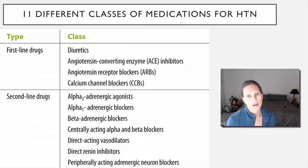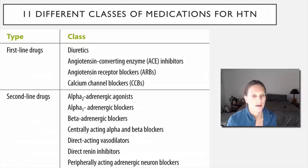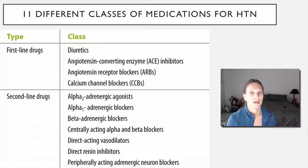There are 11 different classes of medications for hypertension, divided into first-line and second-line. The first-line drugs — diuretics, ACE inhibitors, angiotensin receptor blockers, and calcium channel blockers — are used more frequently, used earlier, and often used on their own. Diuretics are still considered the first-line medication for most cases of hypertension, decreasing fluid volume and thereby decreasing pressure. ACE inhibitors and ARBs are almost interchangeable and are also first-line.